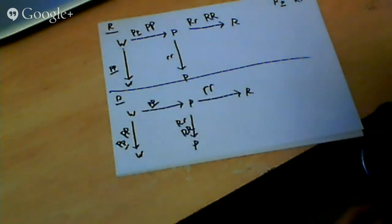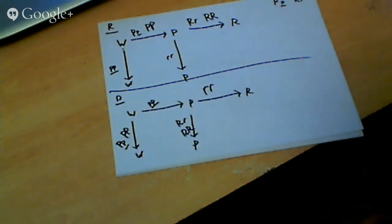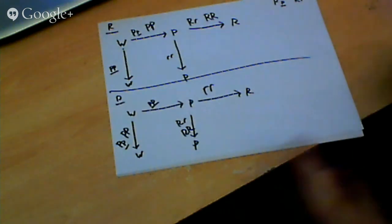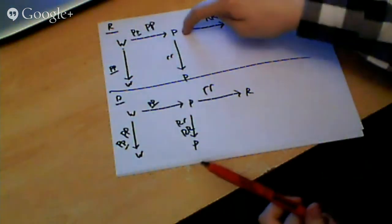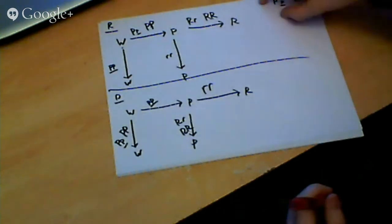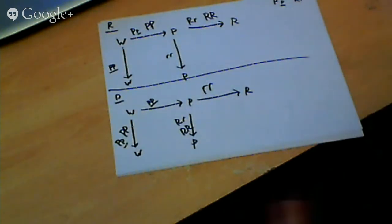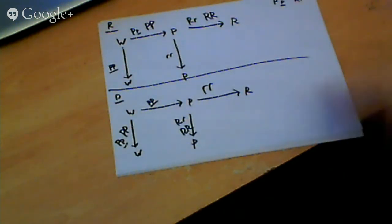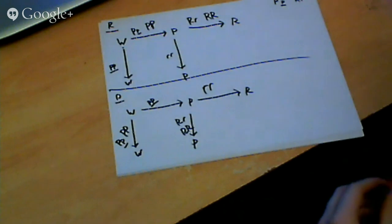Recessive epistasis: if you have the recessive form of the gene, it is masked; if you have the dominant form of the gene, that gene is expressed. And it can be in a sequence. In dominant epistasis: if you have the dominant form of the gene, it's masked; if you have the recessive form, it will be expressed.